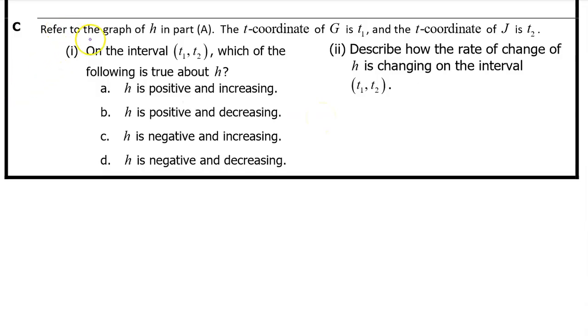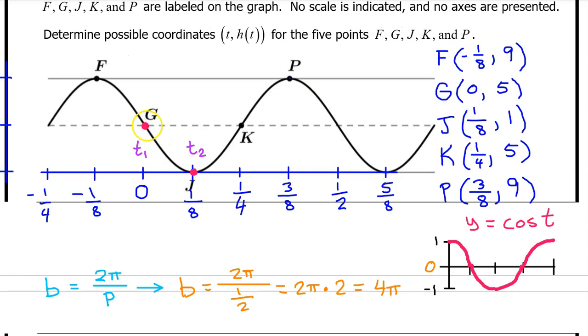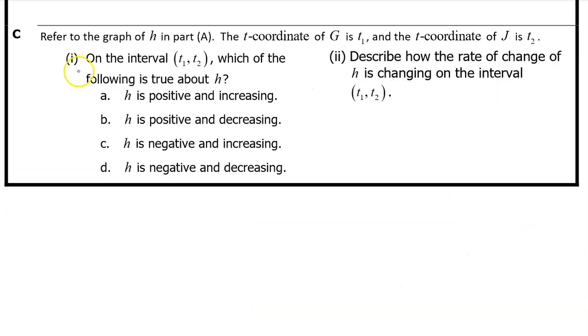Part C. Refer to the graph of h in part A. The t coordinate of G is t1 and the t coordinate of J is t2. Here's point G and here is point J. So this is t1 and this is t2. C part one. On the interval from t1 to t2, which of the following is true about h? Is h positive and increasing, positive and decreasing, negative and increasing, or negative and decreasing?